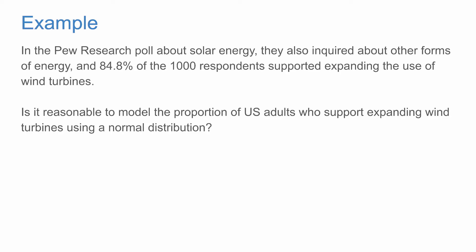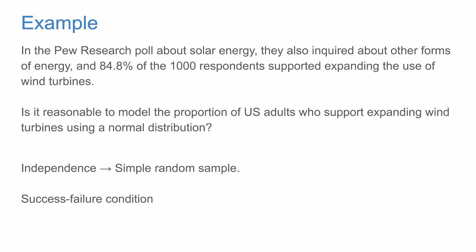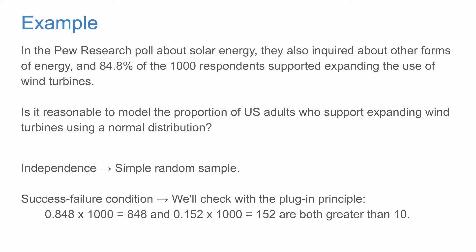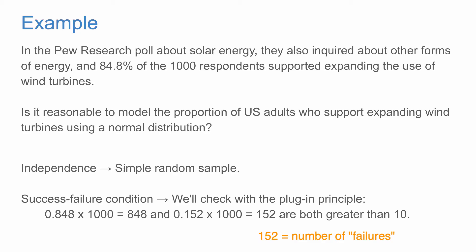Let's check our conditions. First, we check independence. Since the data come from a simple random sample, independence is satisfied. Next, we check the success-failure condition. Here we'll check it with the plug-in principle, using our observed proportion. 0.848 times 1,000 is 848 — that's certainly greater than 10. And 0.152 times 1,000 equals 152, which is also at least 10. With both conditions satisfied, we can use the normal distribution to model the sample proportion.